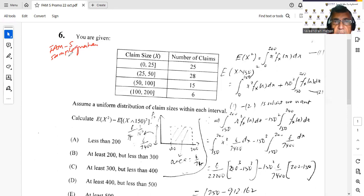You are given claim size in this box on the left and then we are given number of claims, and we are asked to assume a uniform distribution of claim sizes within each interval. We are asked to calculate the expected value of x squared minus the expected value of x limited by 150 whole thing squared. So this is what we want to find.